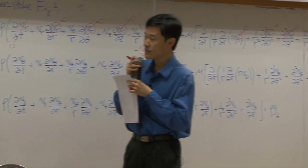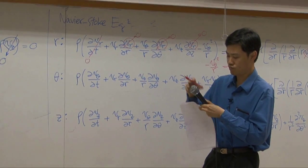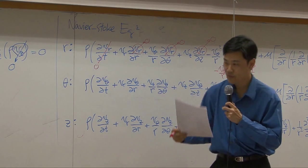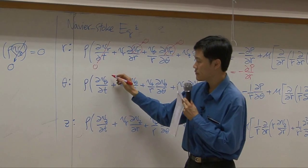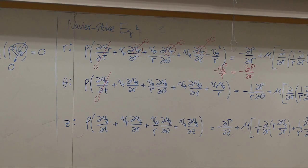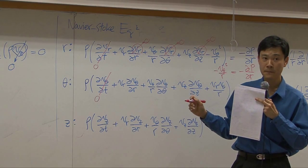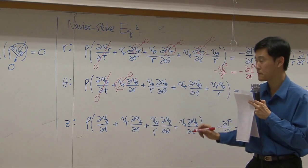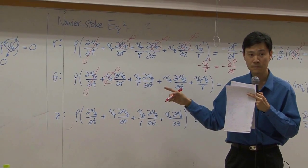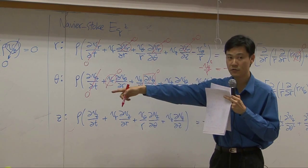For the second component, the theta component: the first term can be dropped. The second term — can it be dropped? Yes, because Vr here is zero. Is V_theta zero? No. Can it still be dropped? Yes, because everything here becomes zero according to the equation of continuity.